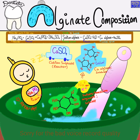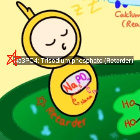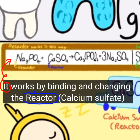By watching this video, I hope that the names of important chemical components of alginate will be retained in your memory for your study and exams. Among the alginate components, the most frequently asked is tri-sodium phosphate. This works as a retarder — it slows down the reaction.